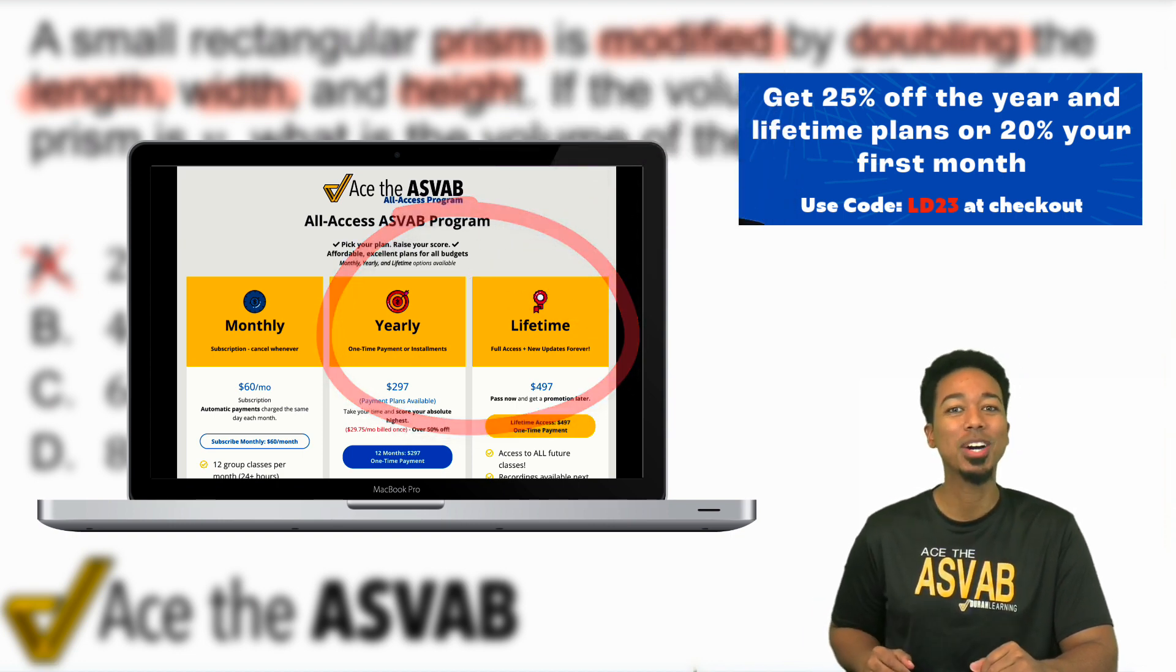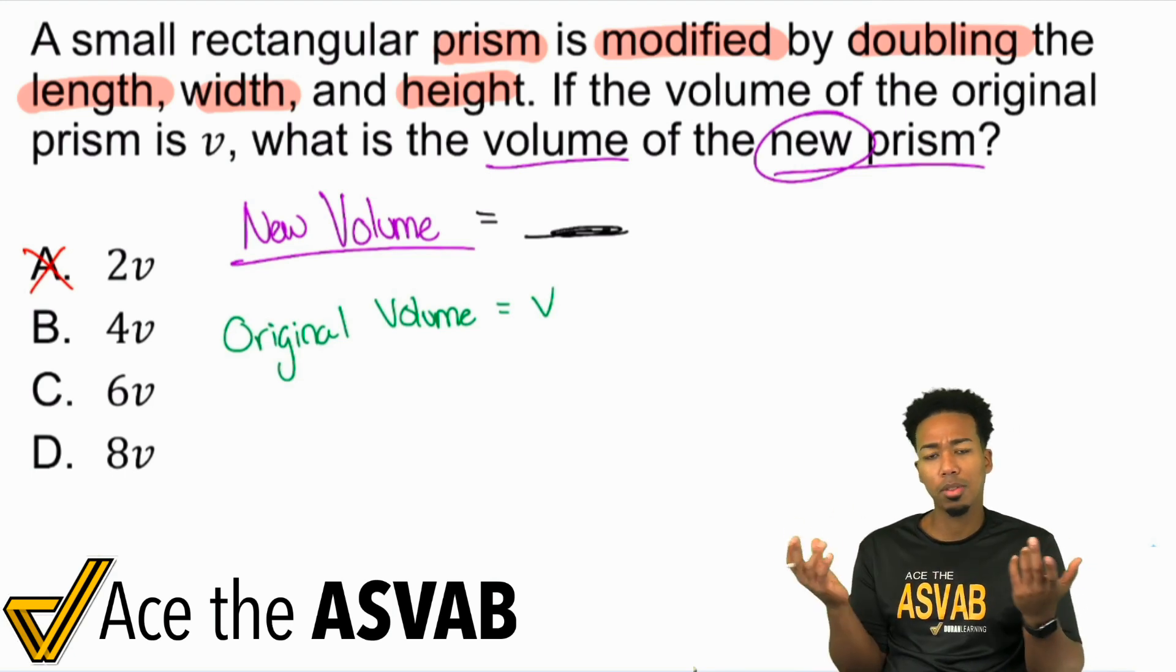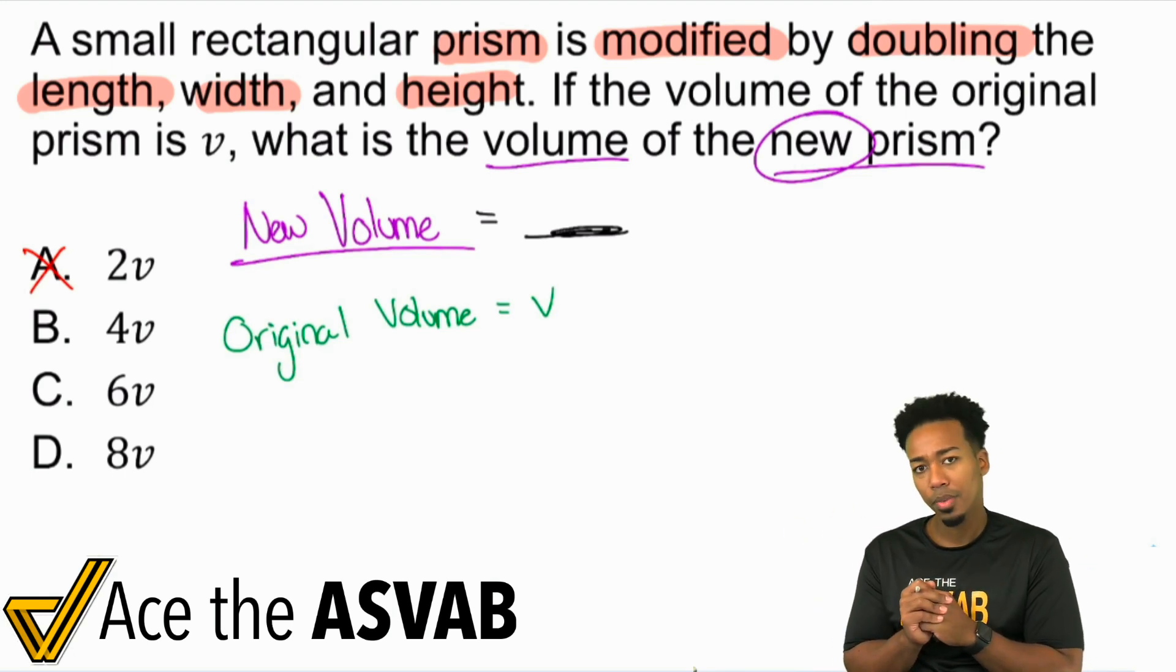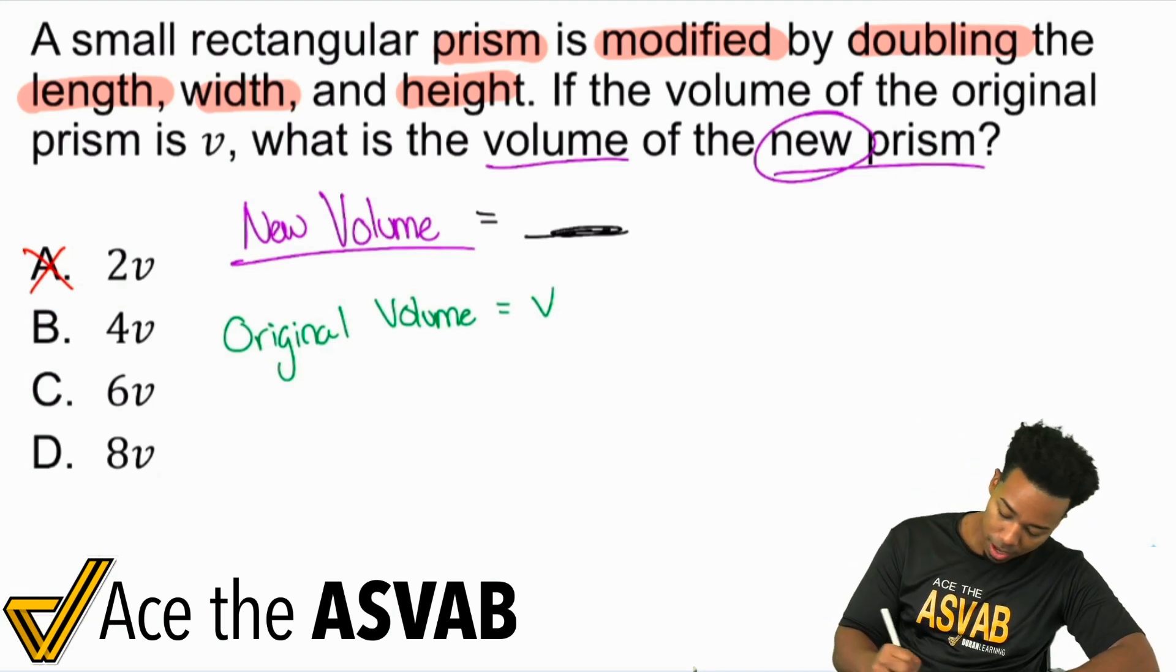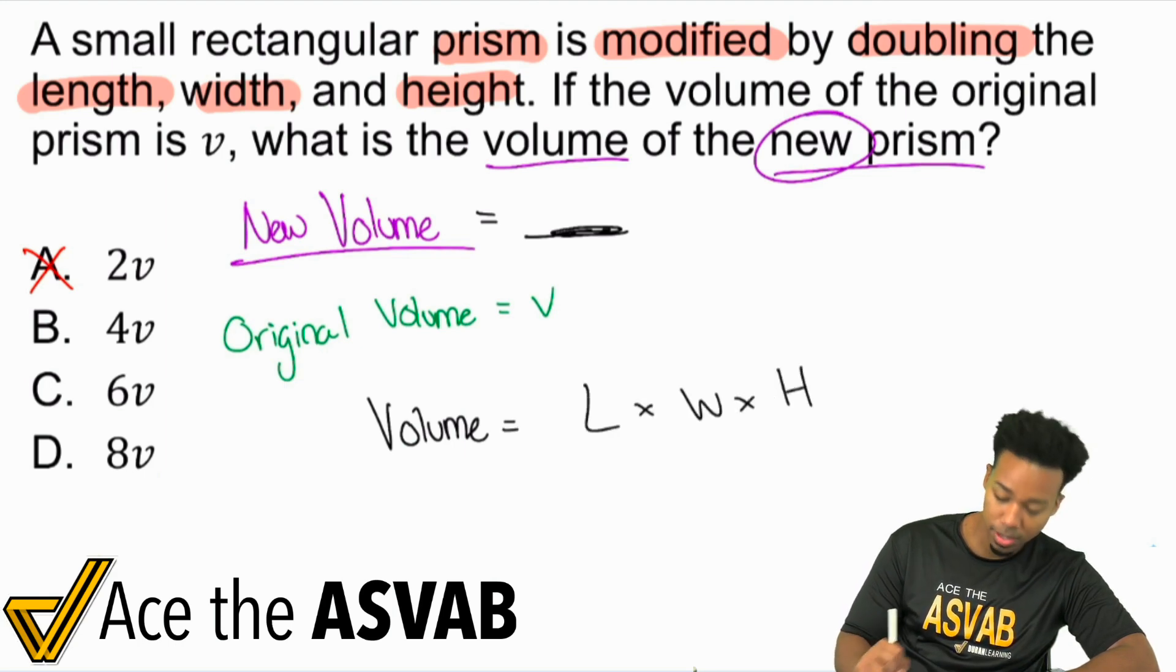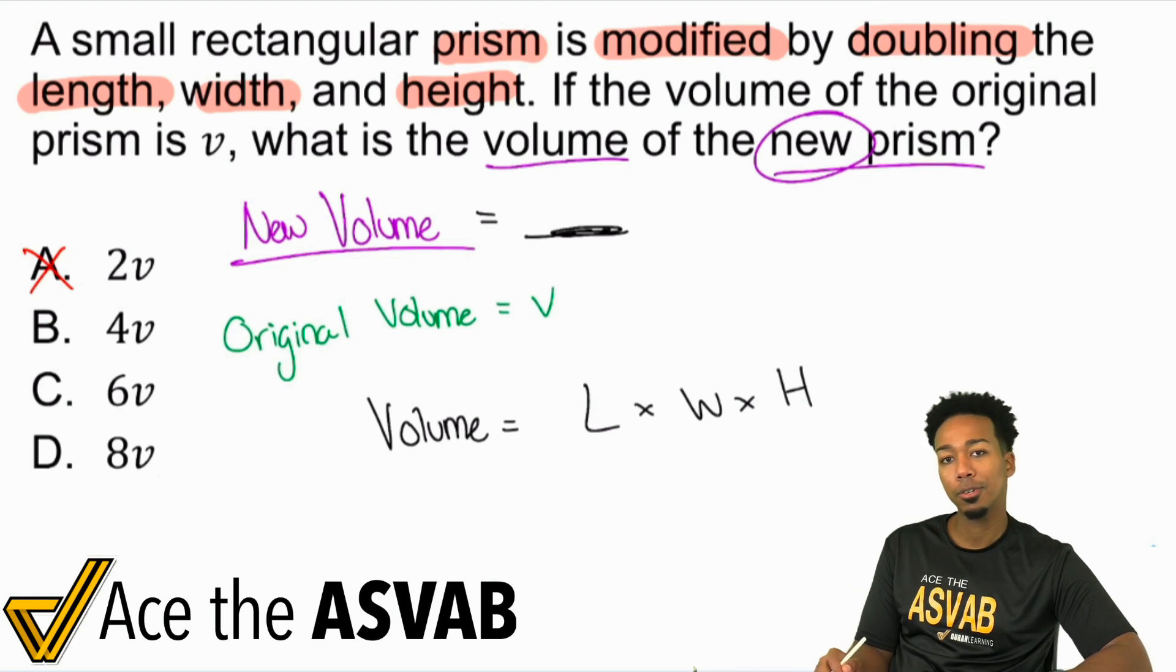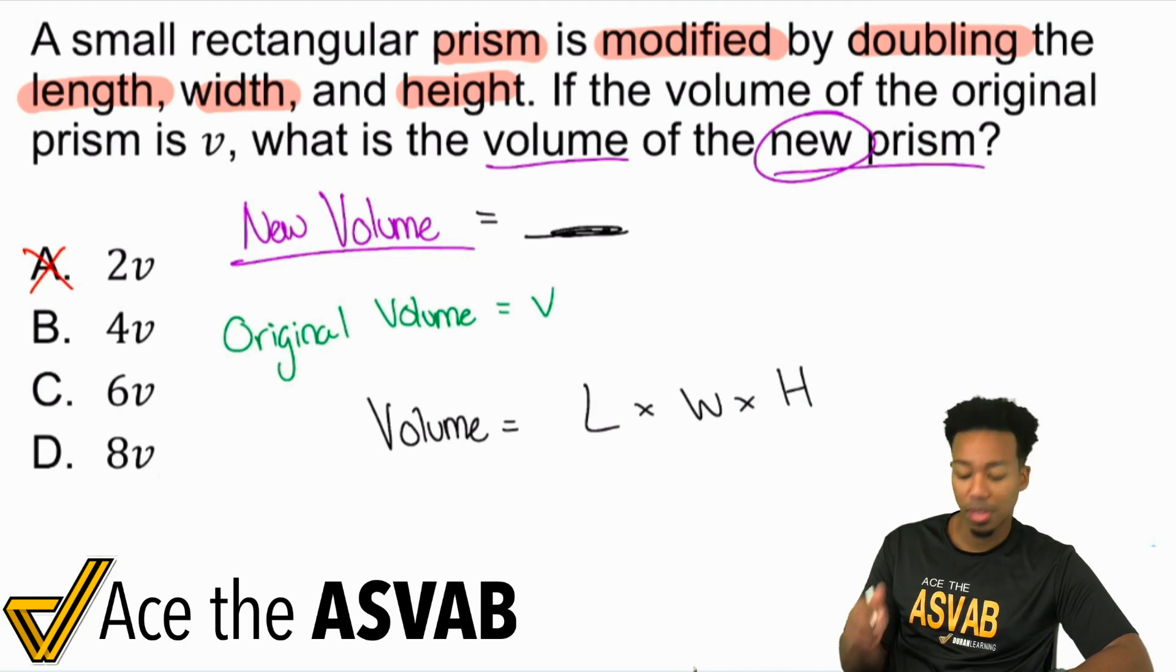The answer is not A, it's not just gonna be double the volume. No no no no no no no. Remember this, everybody. The volume is equal to the length times the width times the height. If we're looking at a rectangular prism, you multiply all three dimensions, the length, width, and height, and that's how you're gonna get that volume.